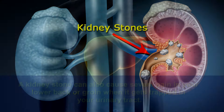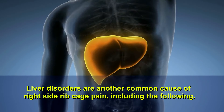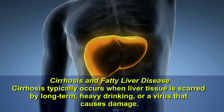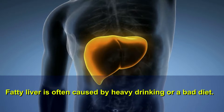Liver disorders are another common cause of right side rib cage pain, including cirrhosis and fatty liver disease. Cirrhosis typically occurs when liver tissue is scarred by long-term heavy drinking or a virus that causes damage. Fatty liver is often caused by heavy drinking or a bad diet.